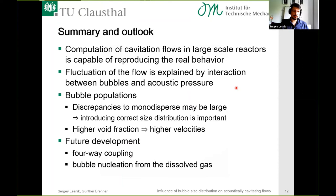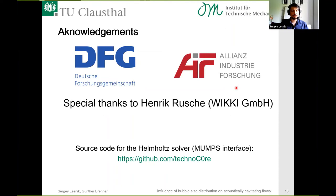To summarize: we are now capable of computing cavitation flows comparable to experiments; we explained why fluctuations appear; we showed that real size distribution matters significantly; and high void fraction leads to high velocities. Future development requires four-way coupling and scalar transport for dissolved gas, since real bubbles may coalesce and dissolve. Thanks to DFG and our sponsors, and to Henry Crusher from Wiki for support.